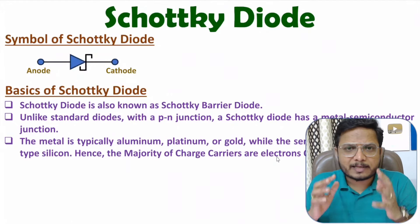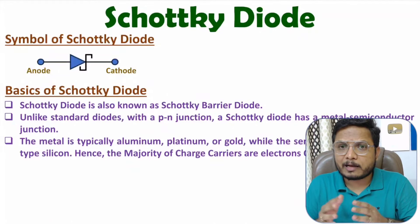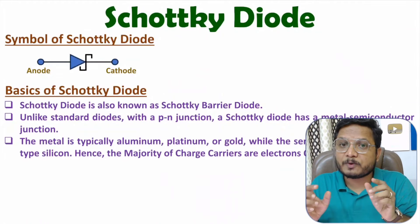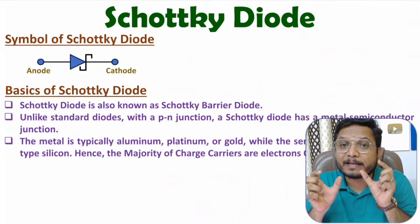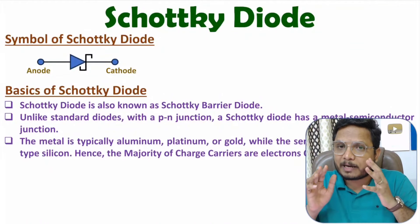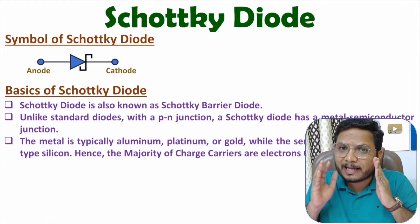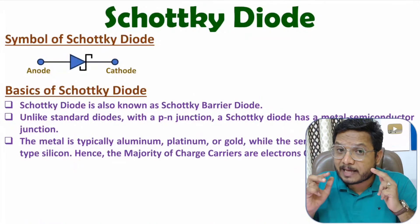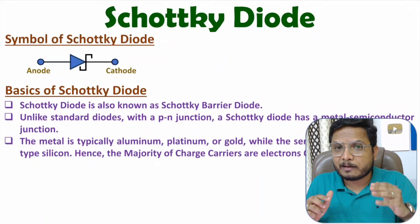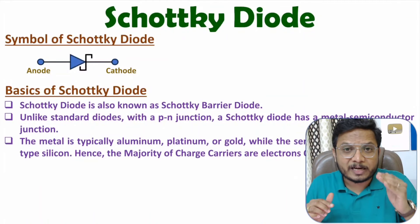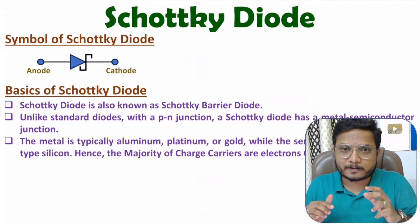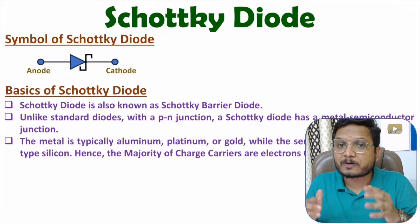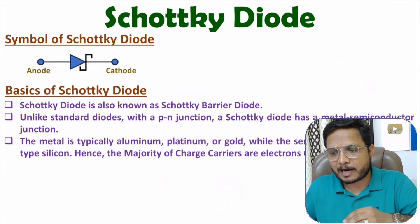In a normal PN junction diode, current flows because of both electrons and holes since we have P-type and N-type material. But in a Schottky diode, we have only N-type semiconductor material, so majority charge carriers are electrons. Therefore, current in a Schottky diode flows because of electrons only.